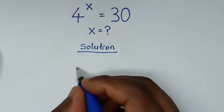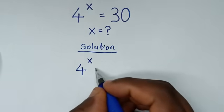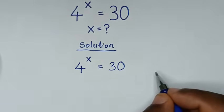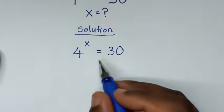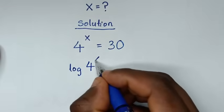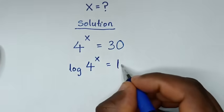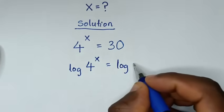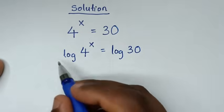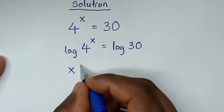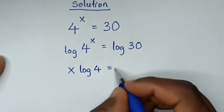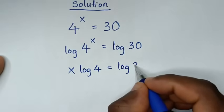From our problem which is 4 power x is equal to 30, in the first step we'll apply log on both sides. So it will be log of 4 power x is equal to log of 30. Then this power of x will move to the base, so it will be x log of 4 is equal to log of 30.